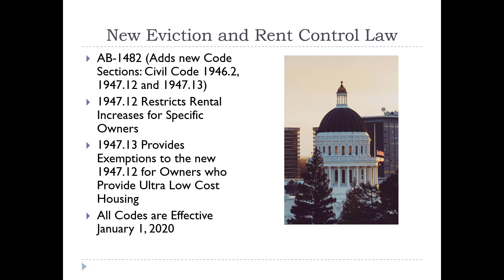This is part of the AB 1482 package which added three new code sections: Civil Code 1946.2, 1947.12 — which we're going to be talking about now — and 1947.13, which adds an exemption for owners that are builders of ultra-low housing, exempting them from the provisions of 1947.12. In the other video we just covered eviction control under 1946.2. This video is going to cover the rent control portion of the new statute, and all these codes go into effect January 1st of 2020.